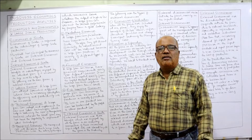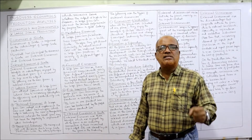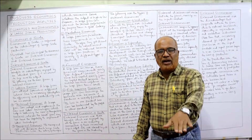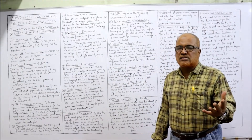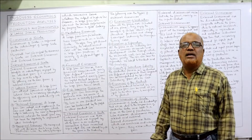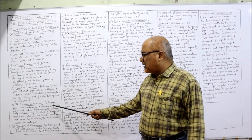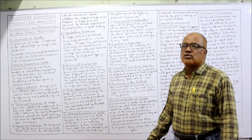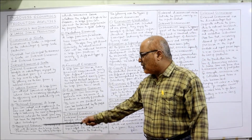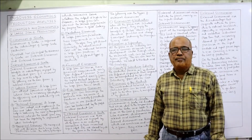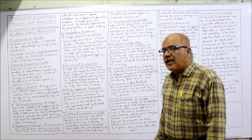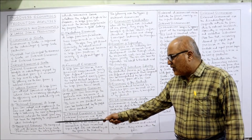Next are technical economies. When the business expands, it can acquire the latest, up-to-date technology. Due to use of latest technology the cost of production comes down, which increases profitability. A large firm can adopt and implement new and latest technology, helping to reduce the cost of manufacturing. Whereas a small firm may not have the capability to implement the latest technology — small firms are unable to adopt it.